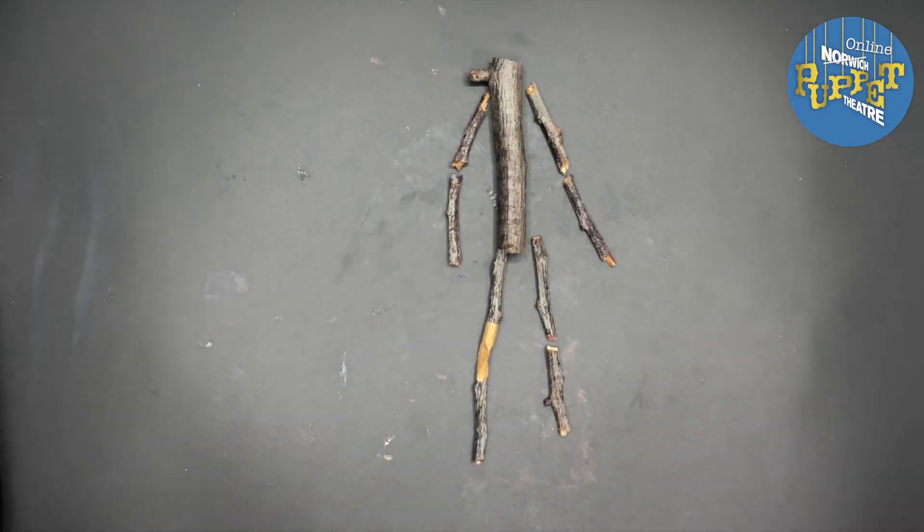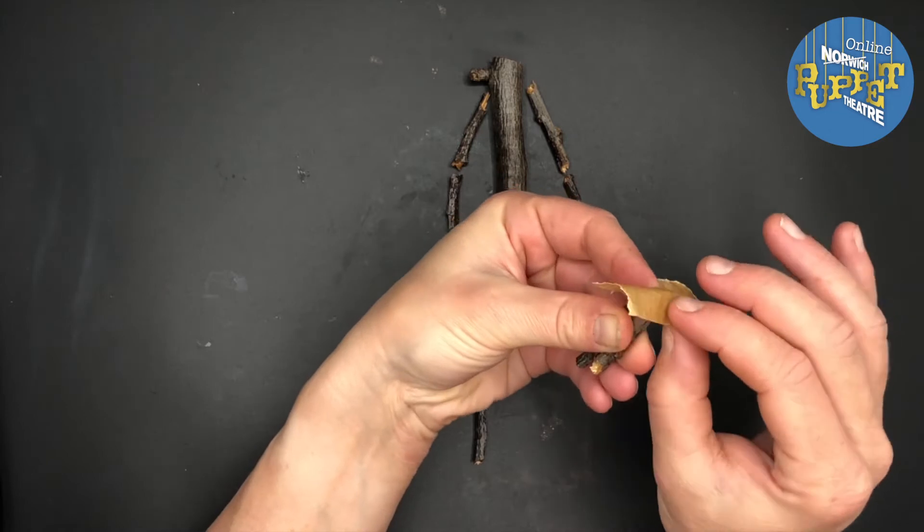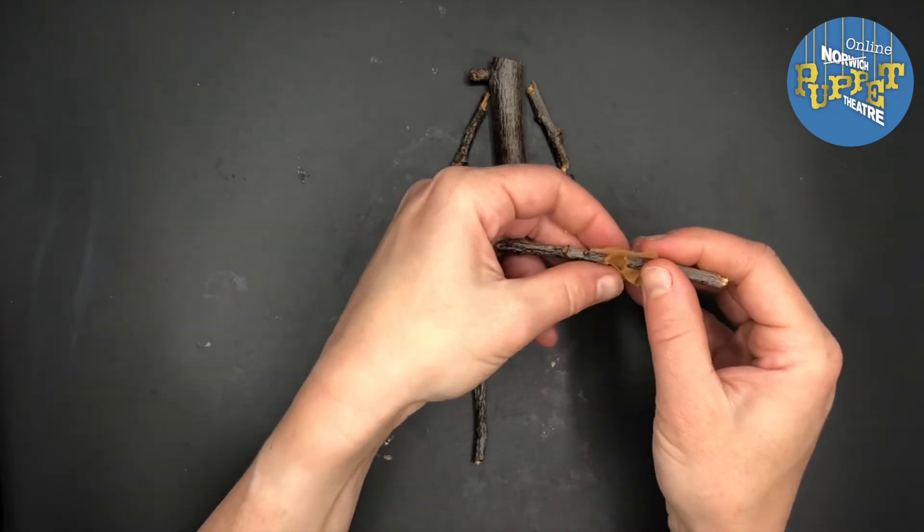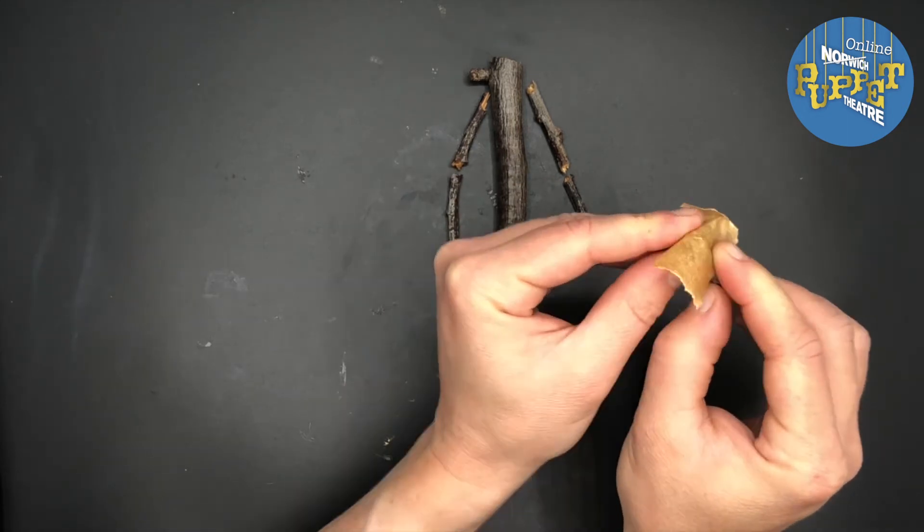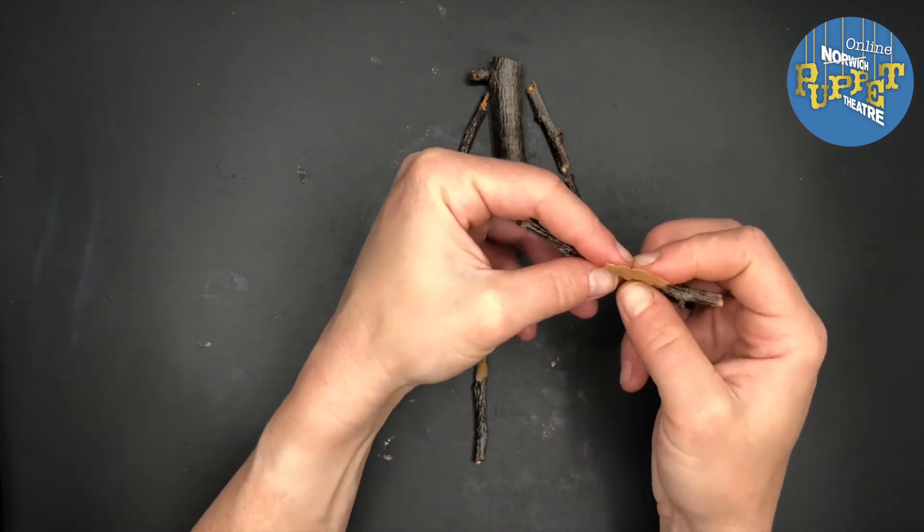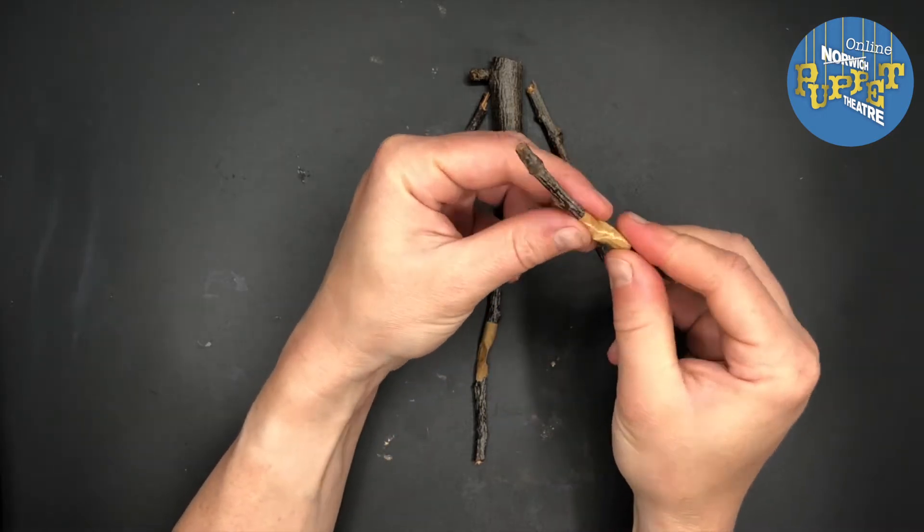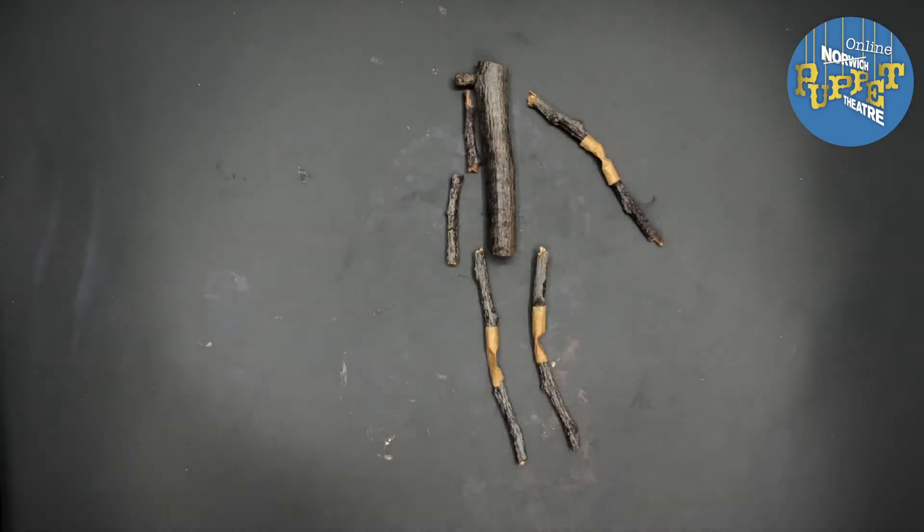So I'm going to do the same on my other two twigs that make my other leg: lining up the ends, sticking the tape over, opening it out, and then rolling the tape up so we have that gap in the middle of just tape for our knee hinge. And then doing the same with the elbows on both of the arms.